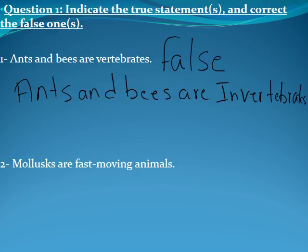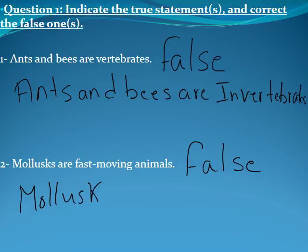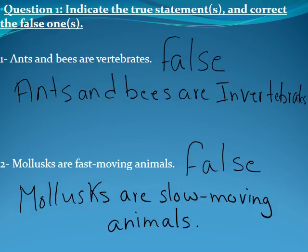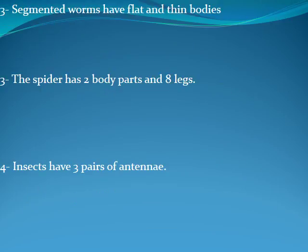Moving to number two. Karim, the statement says molluscs are fast-moving animals — false. For the correction, Karim says molluscs are slow-moving animals. When do they move fast? Yes, when they feel danger. Can you give an example of these molluscs? Squid, snail, octopus. Thank you.